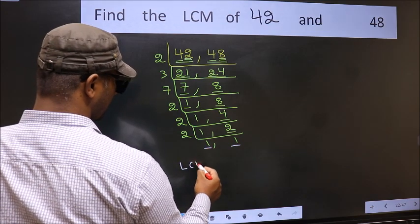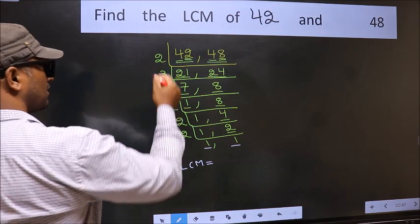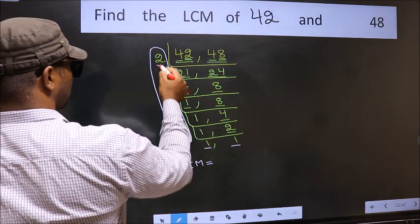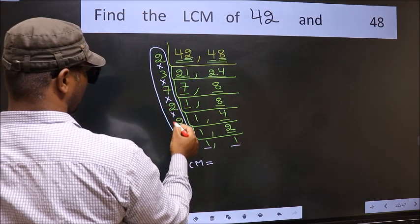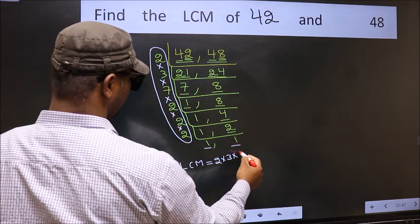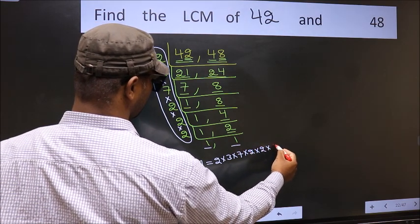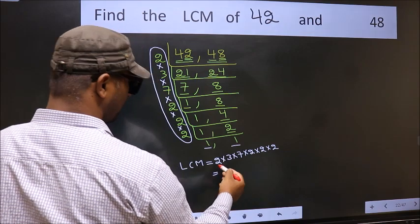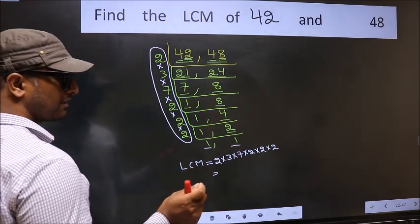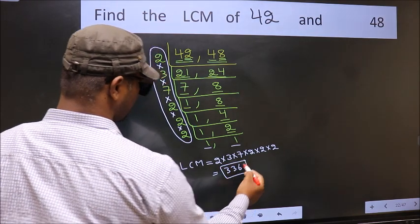So our LCM is the product of all these numbers. That is 2 x 3 x 7 x 2 x 2 x 2 x 2. When we multiply these numbers, we get 336 as our LCM.